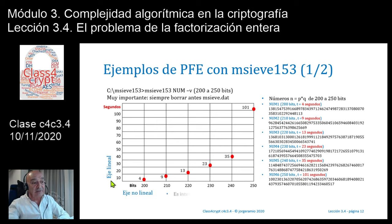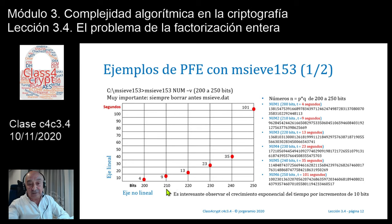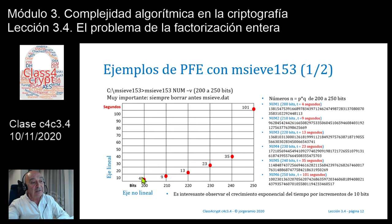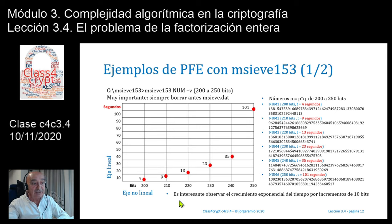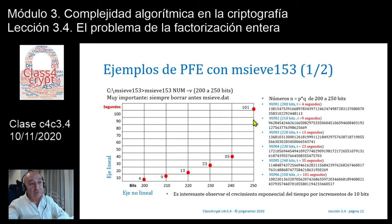Esto me da una curva exponencial. El eje horizontal es lineal: 10, 20, 30, 40, 50. Pero el eje vertical no es lineal en el sentido de que cada incremento de 10 bits significa multiplicar el número por 2 elevado a 10, que es 1024. Es decir, este número es 1000 veces mayor que el anterior. Esto da una curva del tipo exponencial. Los datos 4 segundos, 9, 13, 23, 35 y 101 muestran claramente un comportamiento exponencial; la curva va creciendo.